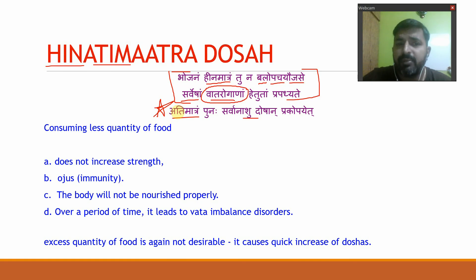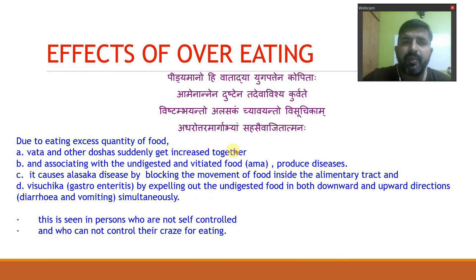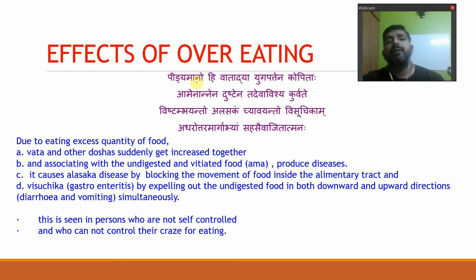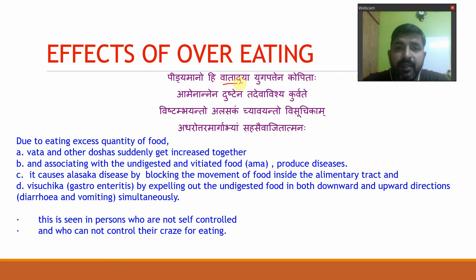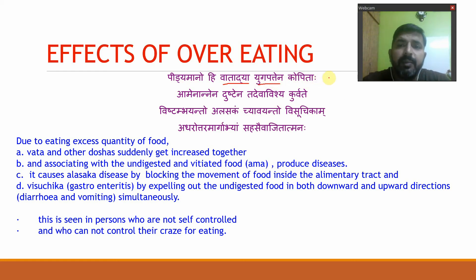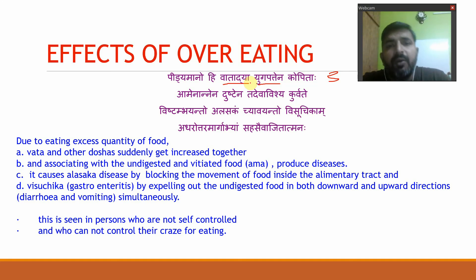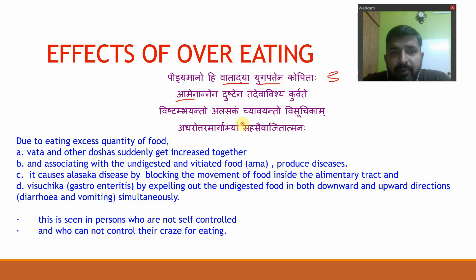Now let's see what other diseases are caused by Ati Matra Ahara. Idiya Mano Hi Vata Adhya Yuga Pathe No Koppate He — this Ati Matra Ahara is going to initiate Vata and other Doshas, troubling all of them. Immediately, all three Doshas — Vata, Pitta and Kapha — get aggravated. This leads to the formation of something called Ama — undigested food, or food which is not properly digested in the stomach.